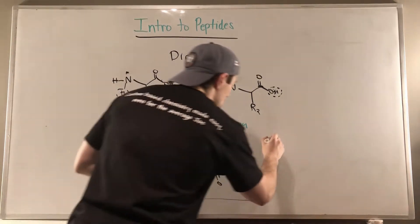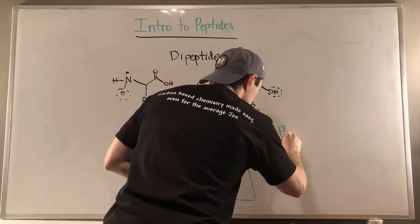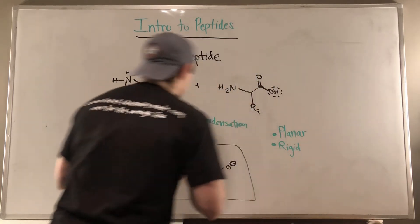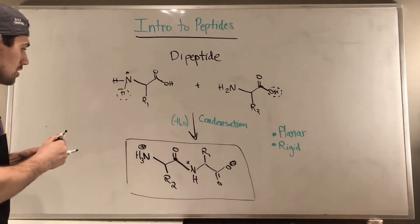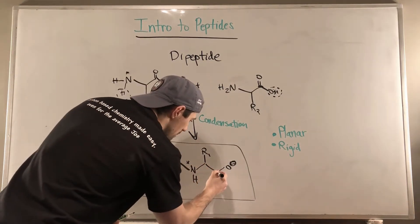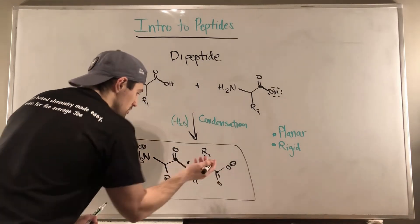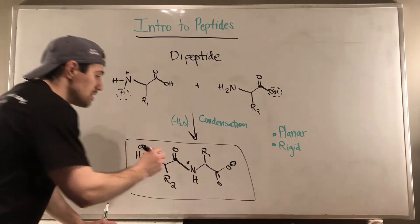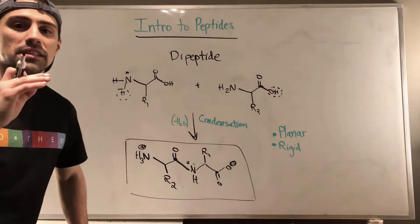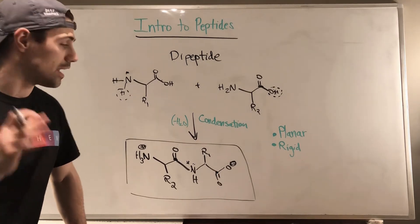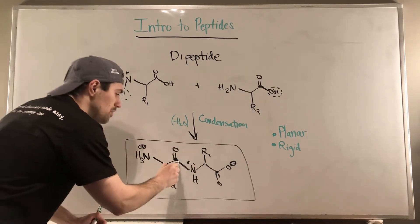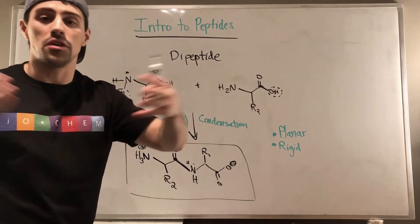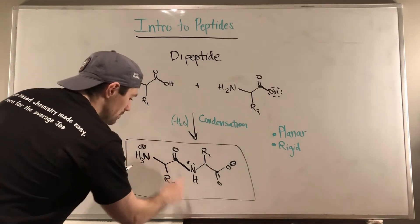Now I want to talk about some properties. Peptides are planar and rigid. In the backbone, we have carbons that are SP2 hybridized — they literally have a planar geometry. If we think back to our carboxylic acid derivatives knowledge, we have amides. This bond that we form — which you make every time you tack on a new amino acid — is called a peptide bond.